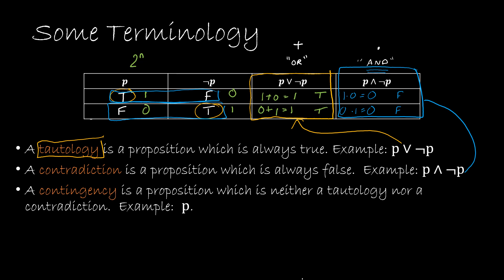A contingency is a proposition which is neither a contradiction nor a tautology. For example, P: if we look at the entries in the P column, we've got a true and a false. So it's not always true and it's not always false — it's a contingency.